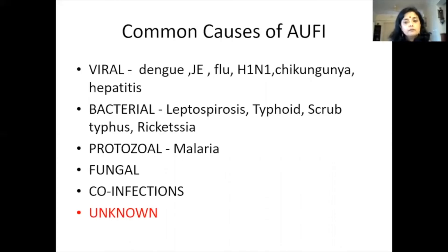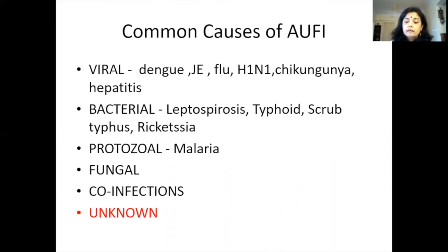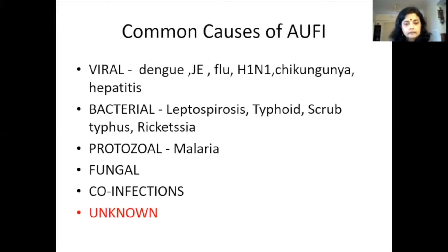The common causes of acute undifferentiated febrile illnesses in India include viral infections such as dengue, Japanese encephalitis, flu, H1N1, chikungunya, and hepatitis. Non-viral causes include leptospira, typhoid, scrub typhus — which has had a surprising resurgence — rickettsia, and of course malaria. One classification groups them as all malarial and non-malarial febrile illnesses. Non-infections of both categories also exist, and the largest portion remains of unknown etiology.